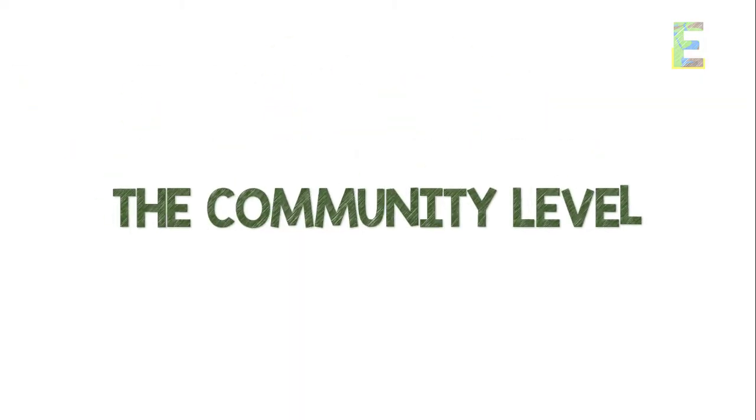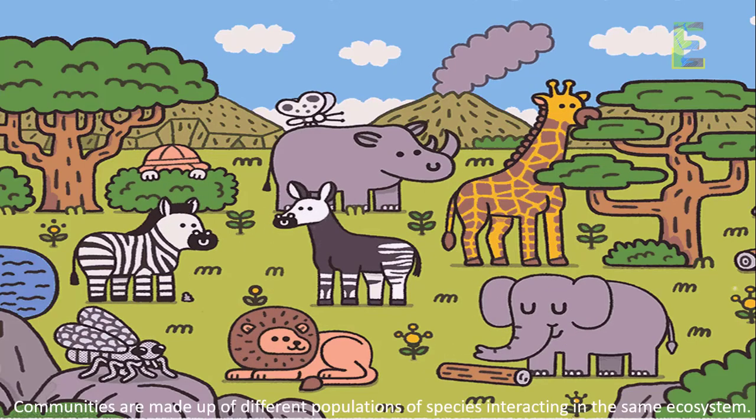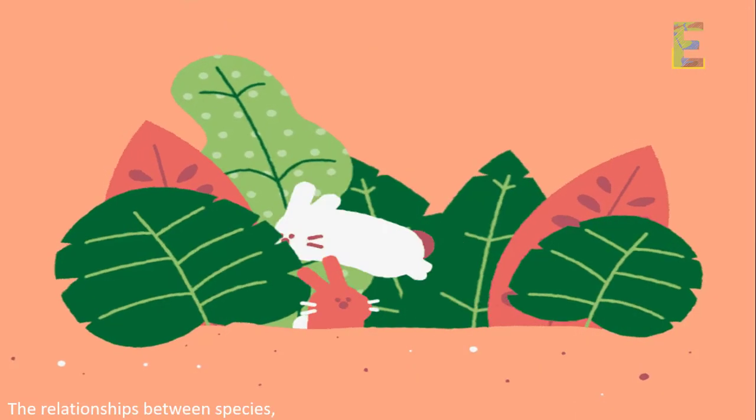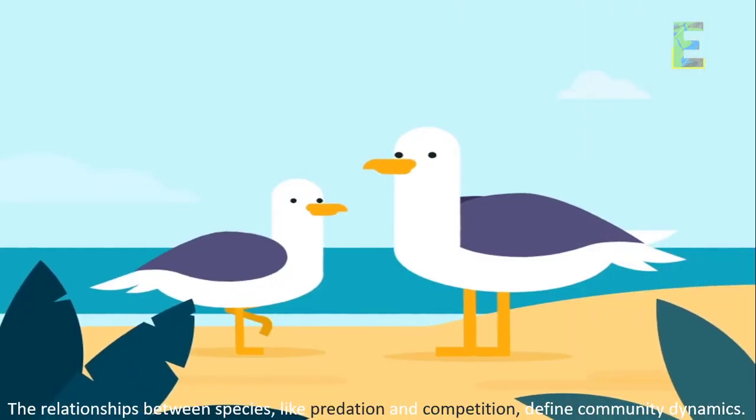The community level. Communities are made up of different populations of species interacting in the same ecosystem. The relationships between species, like predation and competition, define community dynamics.